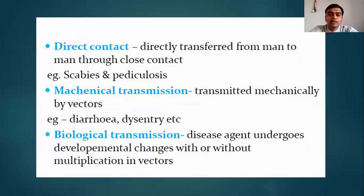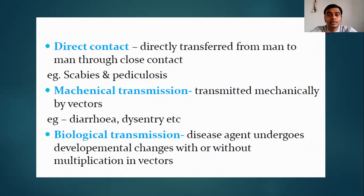What is direct contact? The disease is directly transferred from person to person through close contact. In this case, Scabies and Pediculosis — Pediculosis being head lice — are the causative agents of disease. In direct contact transmission, the Scabies mite or itch mite itself causes the disease; it is not carrying any other transmitting agent like bacteria, virus, or fungi. So in direct contact, the insect is the direct cause of disease.